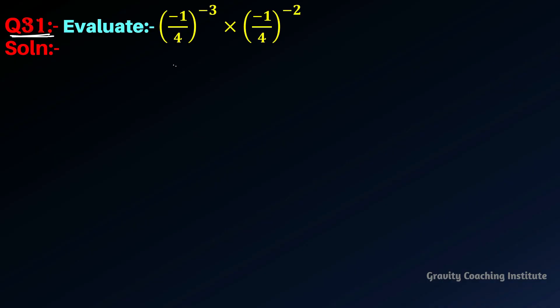Question number 31: Evaluate (-1/4)^(-3) × (-1/4)^(-2).